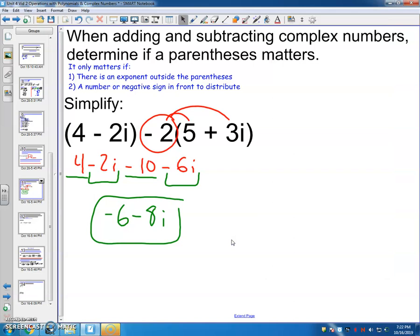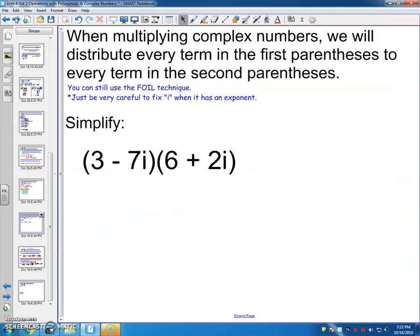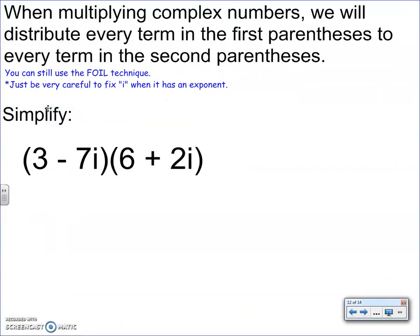That's the same thing for adding and subtracting. Then we move on to multiplying. Like before, we distribute every term in the first parentheses to every term in the second parentheses. We still use the FOIL technique. Just again, be very careful. Fix I when it has an exponent.